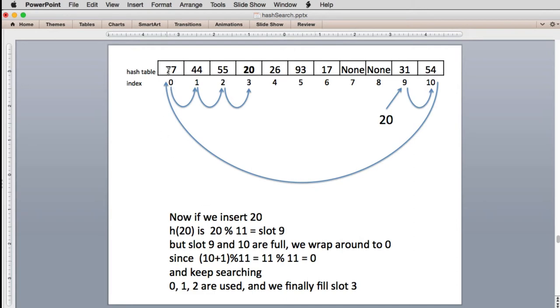So now this is full, so we keep searching. This is full, we keep searching. This is full. And finally you put it in 20. So you can see because of this cluster here, we had to skip a lot of slots to find a place for 20.